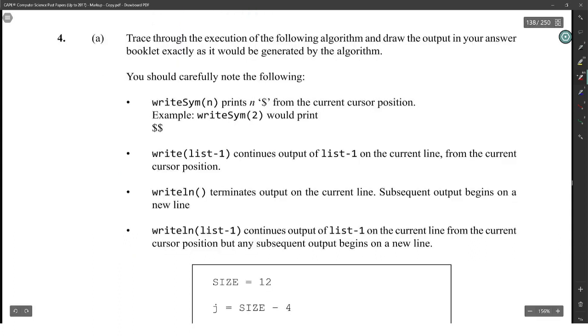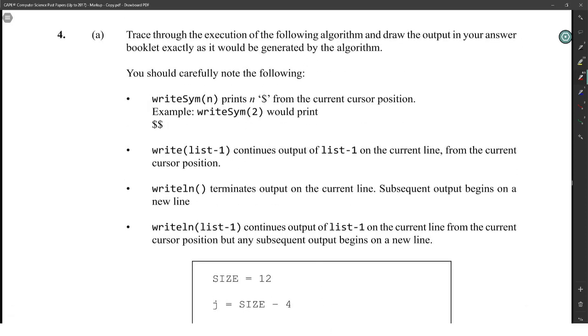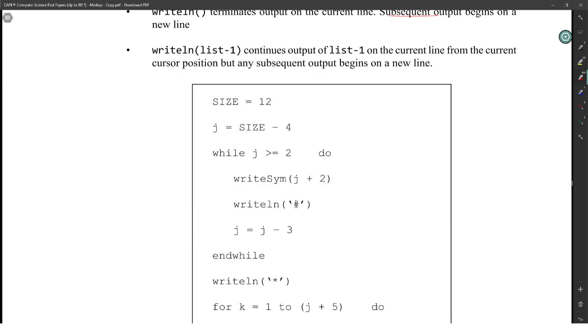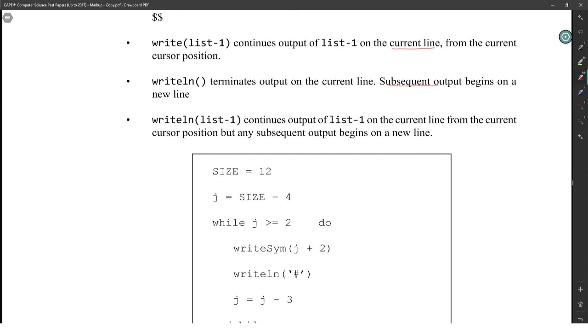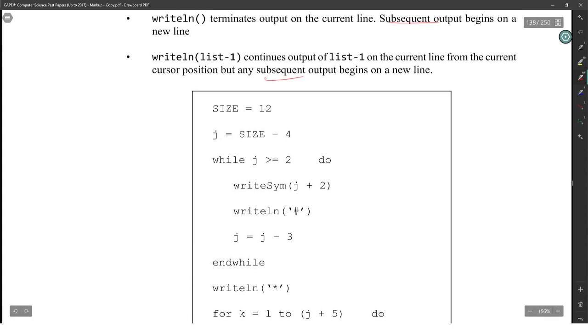Part number 4. Trace through the execution of the following algorithm. Oh, how we love flowchart diagram questions so much. And draw the output in your answer booklet exactly as it would be generated by the algorithm. Write symbol prints dollar sign from the current cursor position. Write dash 1 will continue the output on the current line from the current cursor position. Write line would continue output on the current line, but subsequent output begins on the next line. So print on that line and then go to the next one. Let's see. We have size is equal to 12. I'm going to do the trace. Size is equal to 12. J is equal to size minus 4. So you know that J is equal to 8.